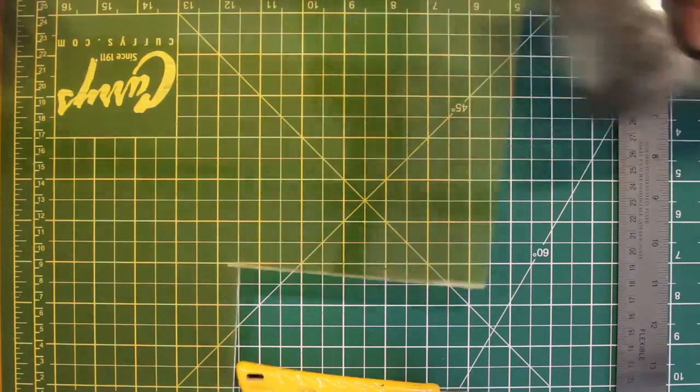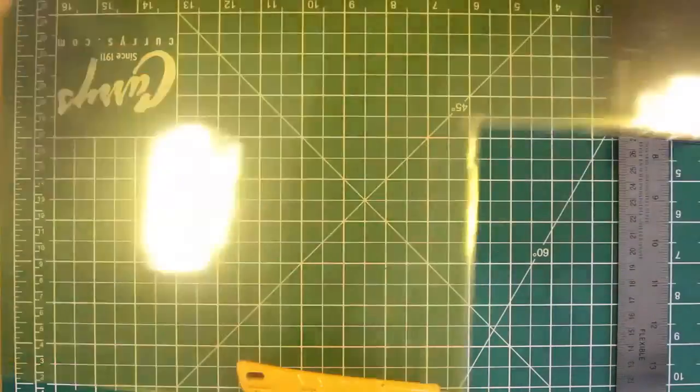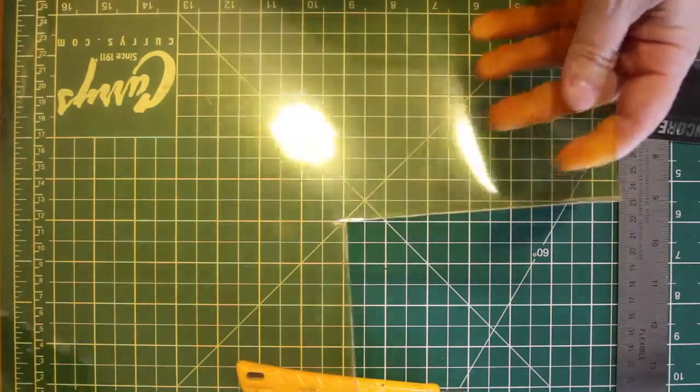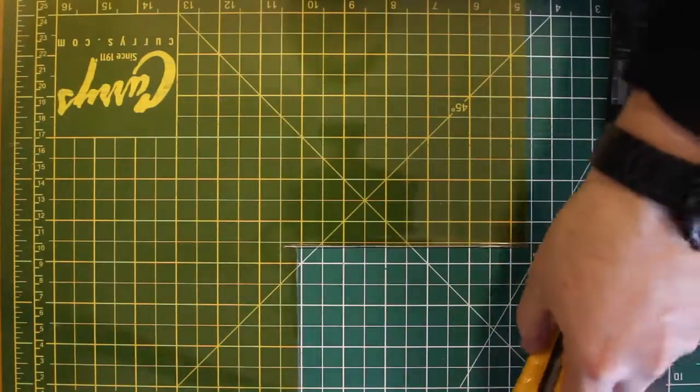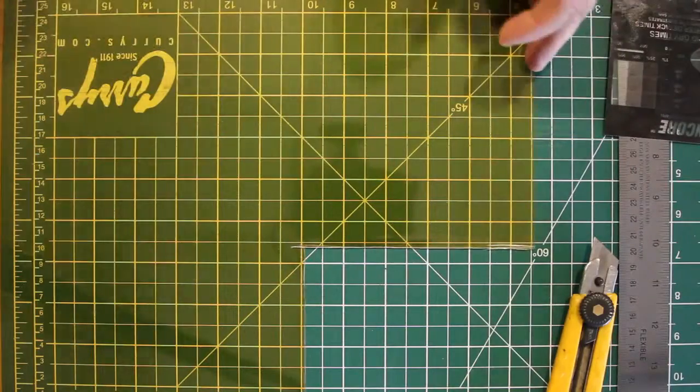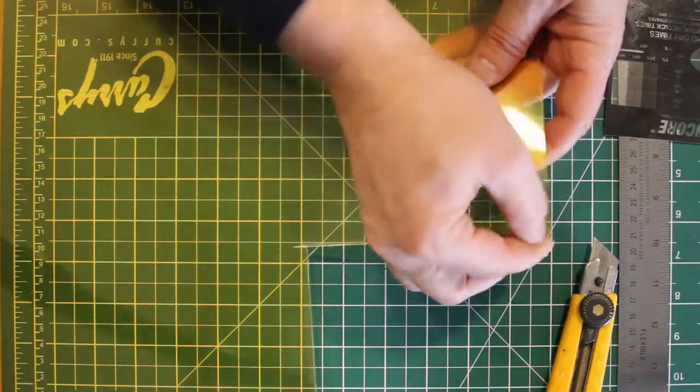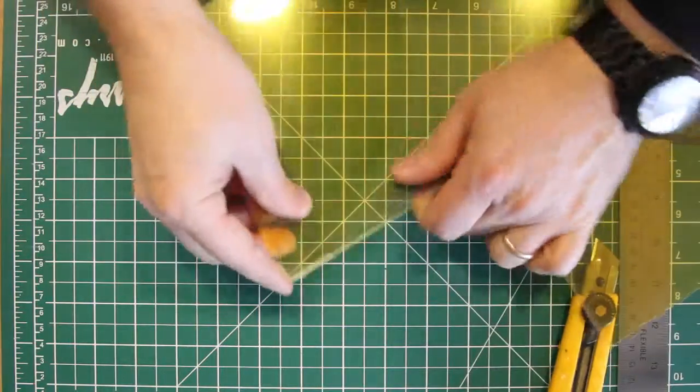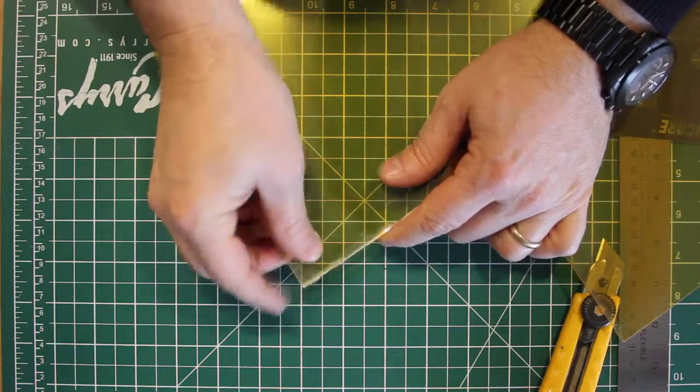You can see the polymer plate material is this orange material. There's a carrier sheet, a plastic sheet underneath that holds the polymer, and then there's also a protective plastic coating on this sheet which will peel off.